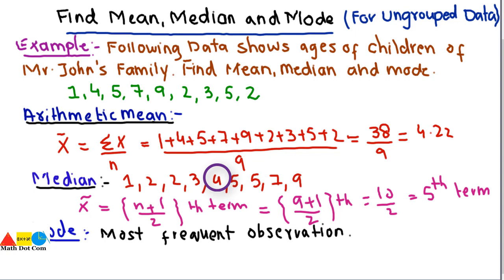How you can find the mode? Mode is basically the most frequent observation in the given set of data. That means the observation that occurs with the highest frequency. So most frequent observation.